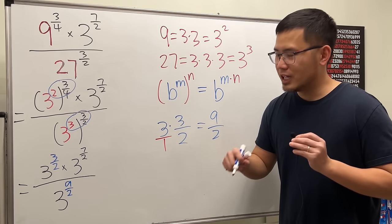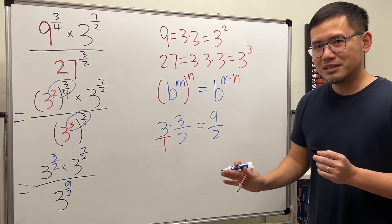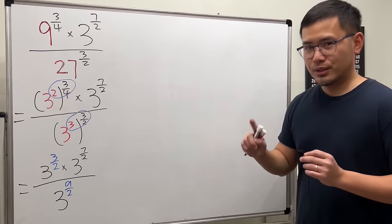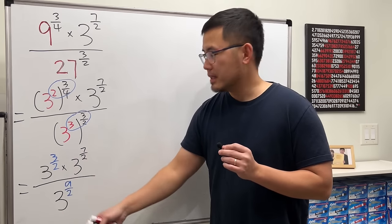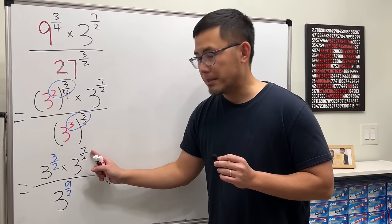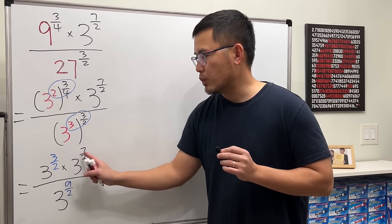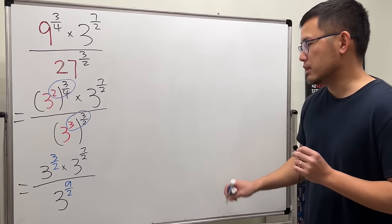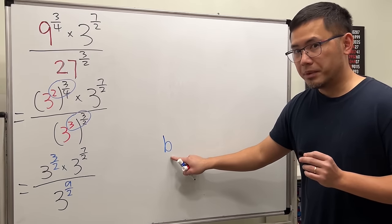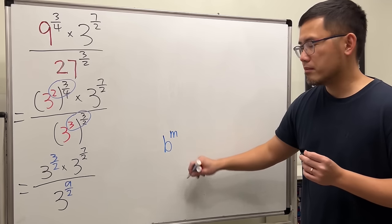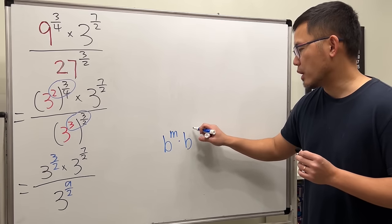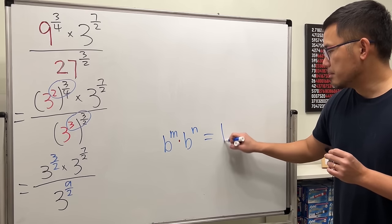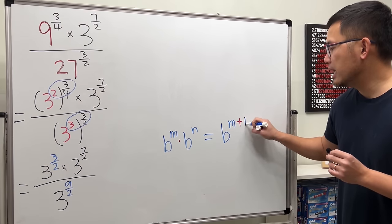I know we have done a lot already, so just calm down and relax — a lot of fractions plus the rules of exponents, this is definitely not easy. Now what can we do next? We are multiplying 3 to one power and 3 to another power, and since the bases are the same, we can add the exponents. That's another rule of exponents: if we have b raised to the m times b raised to the n with the same base, this equals b raised to the m plus n power.